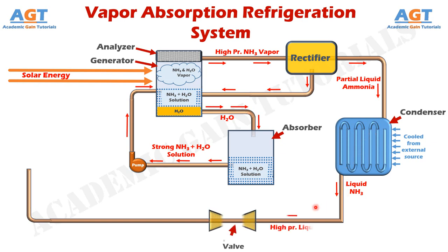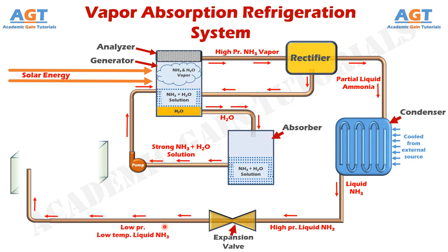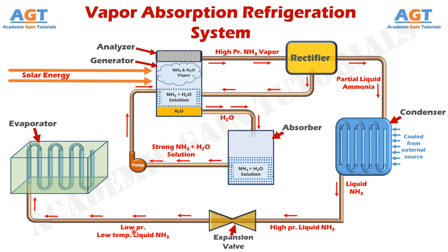Now, here we have an expansion valve. After condensation, liquid ammonia will leave the condenser and pass through this expansion valve. This high pressure liquid ammonia coming from the condenser will be expanded inside this expansion valve. We know that when expansion occurs, the pressure between the molecules decreases considerably, thus the temperature falls. So, this high pressure liquid ammonia will be expanded into low pressure, low temperature liquid ammonia. Thus, here we get very cold, chilled, low temperature liquid ammonia coming out of the expansion valve.